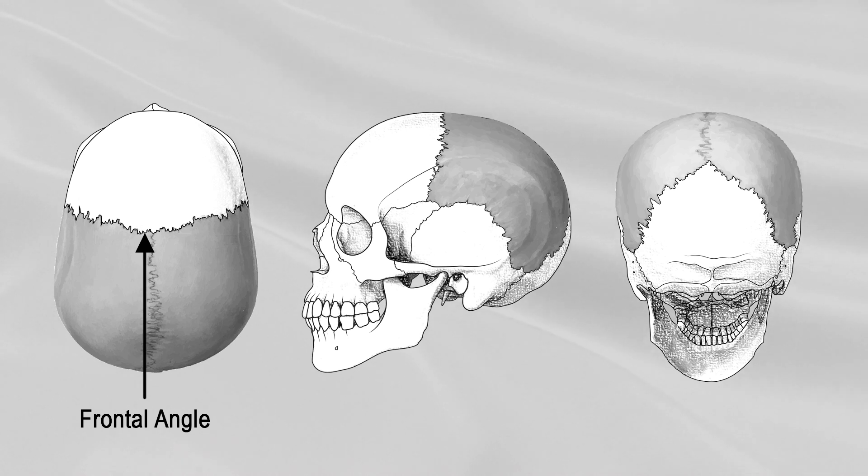Angles. The frontal angle corresponds with the point of meeting of the sagittal and coronal sutures, called the bregma. In the fetal skull, it corresponds in position with the anterior fontanelle.